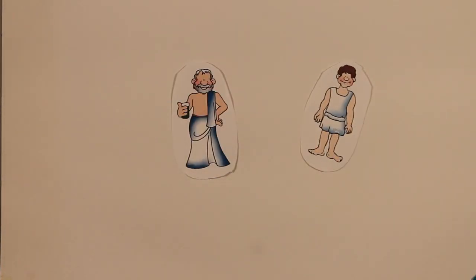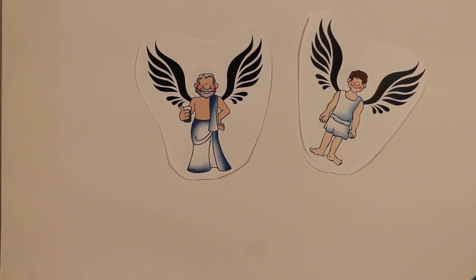In order to escape, Daedalus constructed two pairs of wings for him and his son to fly out of the prison, fashioning the wings out of wax and feathers that he had found.